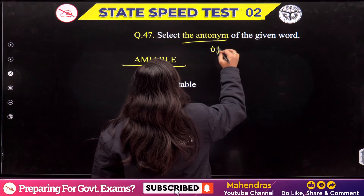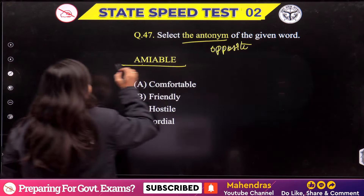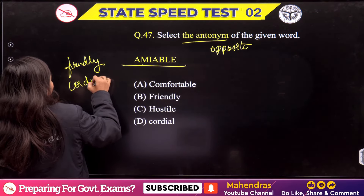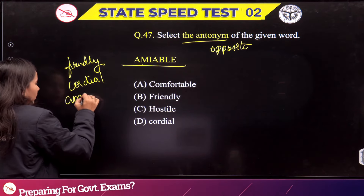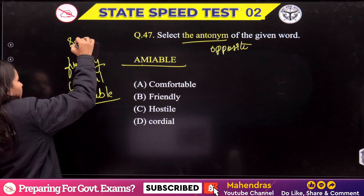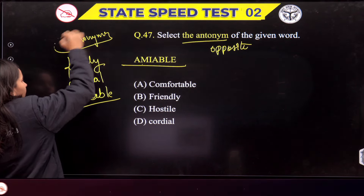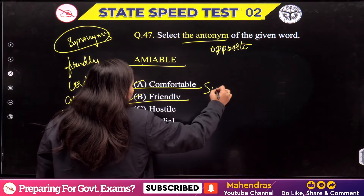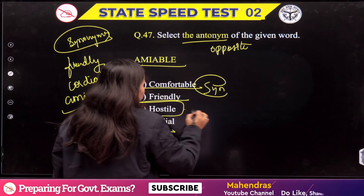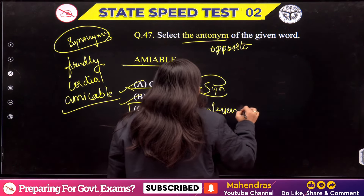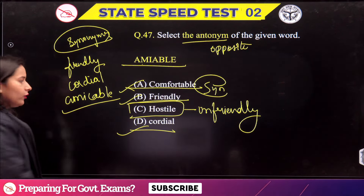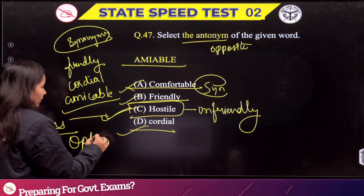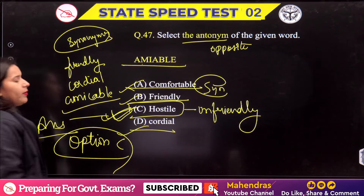Question 47: You need to find the antonym of 'amiable'. Antonym means opposite. 'Amiable' means friendly, cordial, amicable — all these are synonyms. We need the antonym, which means unfriendly. 'Hostile' means unfriendly. So here is your antonym. We will mark the answer as Option C — 'hostile' — which is the antonym of 'amiable'.